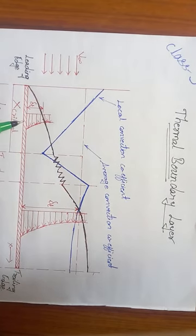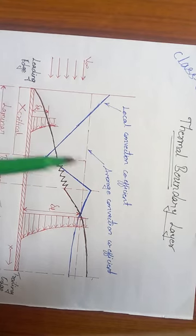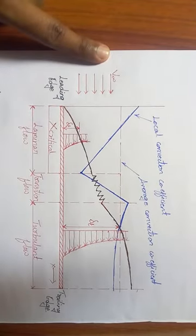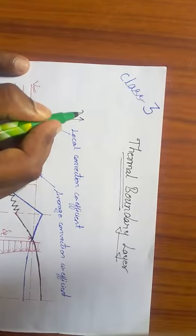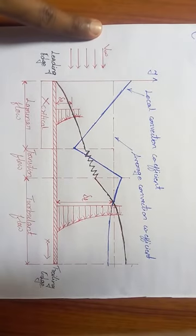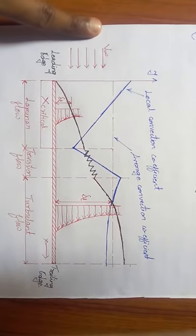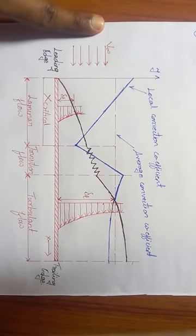In the velocity boundary layer, velocity was minimum—exactly zero at the surface of the plate due to conduction. At y equals zero, the mode of heat transfer is conduction.